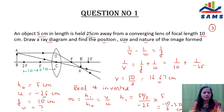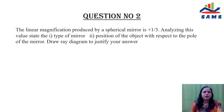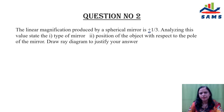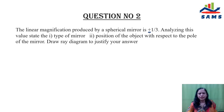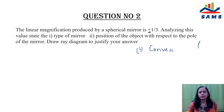Now let us look at the second question. The linear magnification produced by a spherical mirror is +1/3. Analyzing this value, state the type of mirror. The positive sign tells you the focal length of the mirror is positive. A convex mirror has a positive focal length — don't get confused between mirrors and lenses. So this is a convex mirror, and the focus lies on the right-hand side, giving a positive focal length.